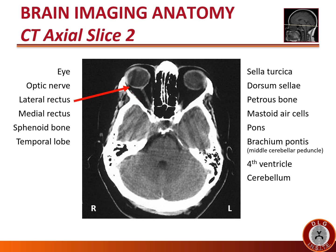The lateral rectus is the muscle lateral to the eye that abducts the eye. The sphenoid bone is seen once again, forming the posterolateral aspect of the orbit. At this level, we more clearly see the temporal lobe in the middle cranial fossa. Note the streaky bony artifact obscuring the parenchyma in the temporal lobe.